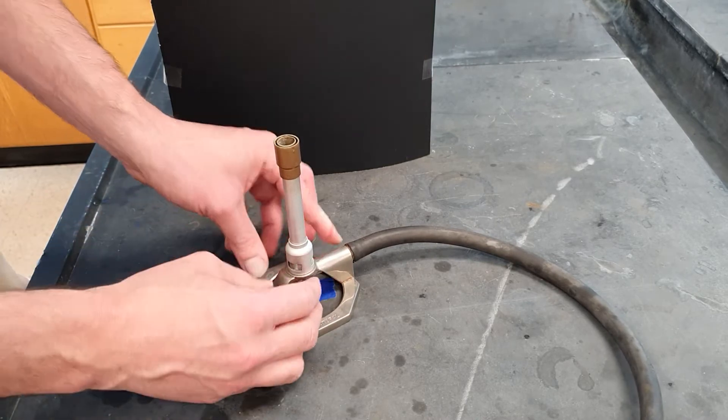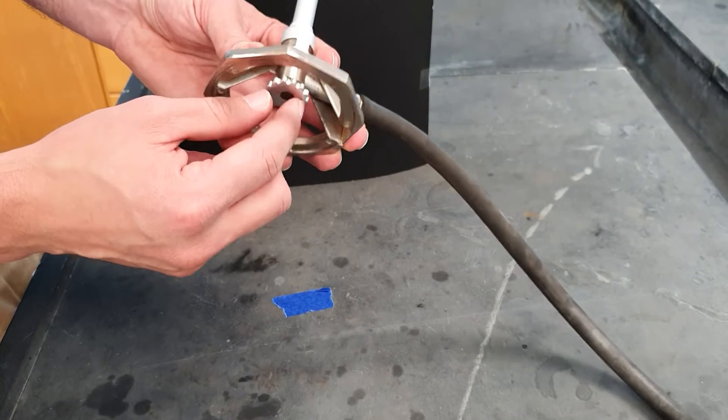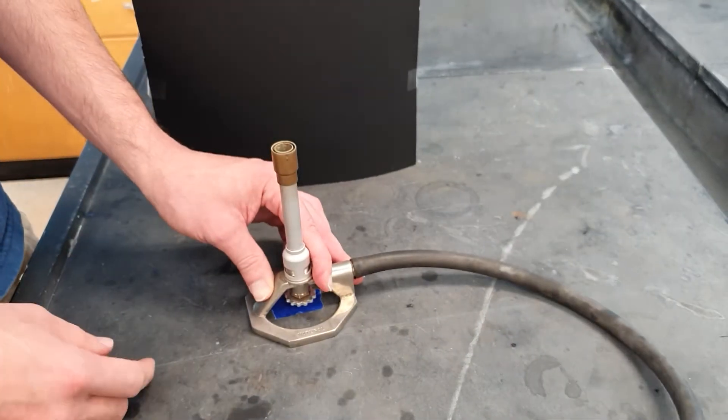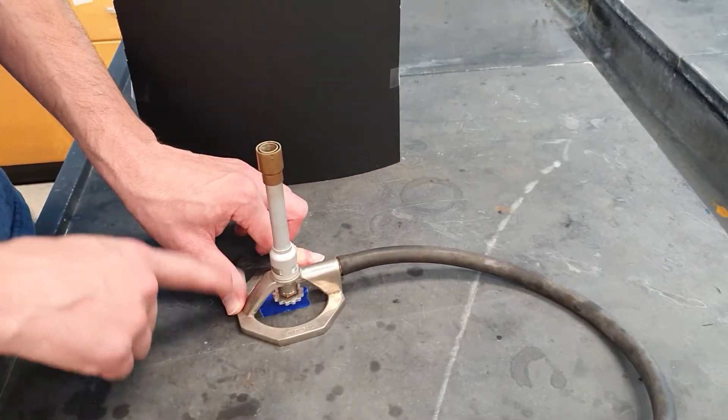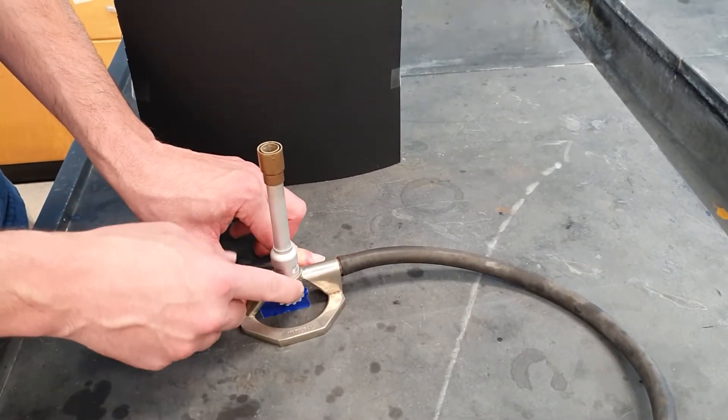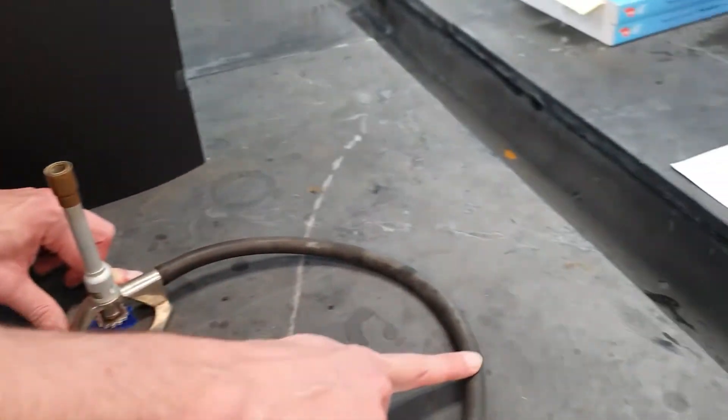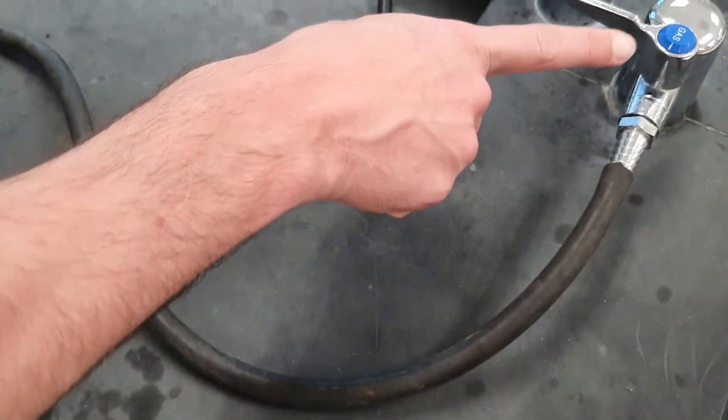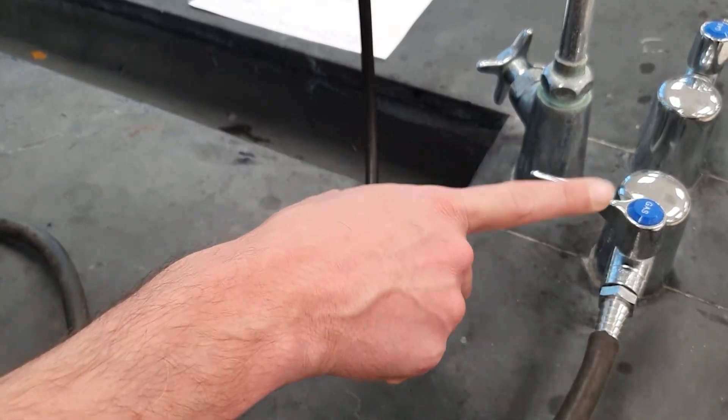When you start, the airflow valve should be closed, that means screwed all the way down, and the gas flow valve should be closed, meaning screwed all the way up, so that no gas can flow. Before you do anything, you check all your equipment. Make sure this is good, having no damage, that everything's closed. You make sure that this is good too. The gas line needs to be free of cracks or damage, and then here, you need to make sure this is closed. Don't start doing things with it being open.